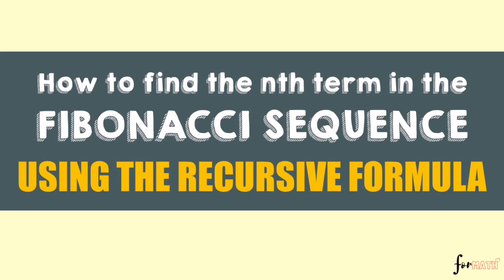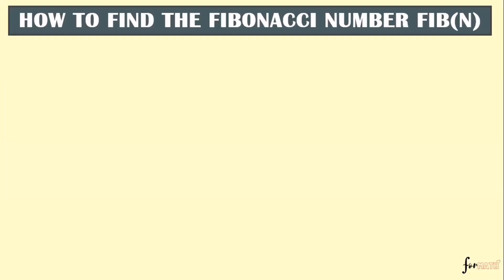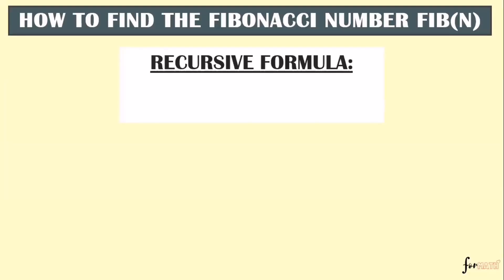Today, everyone. In this video, let's discuss how to find the n-th term in the Fibonacci sequence. Mathematically, it is presented by this formula — we call it the recursive formula. It's because for us to get the next term in the sequence, we have to add the two previous terms. So the formula is: F(n) = F(n-1) + F(n-2).